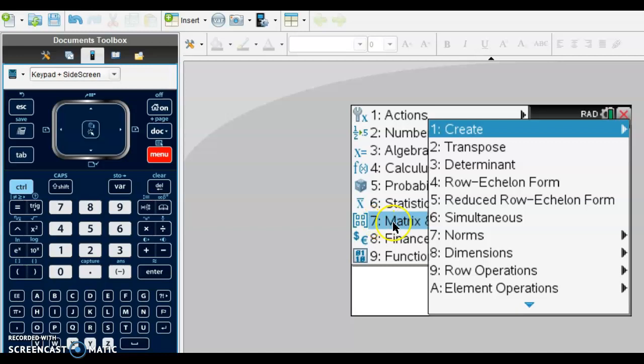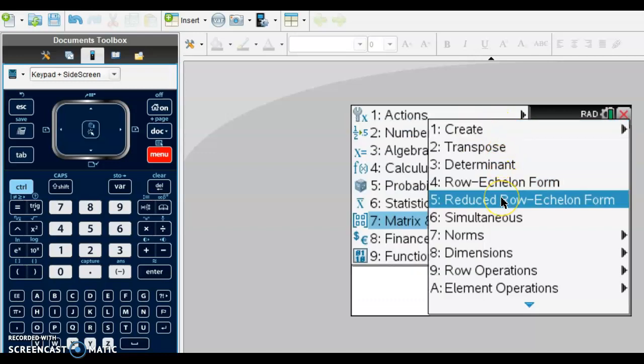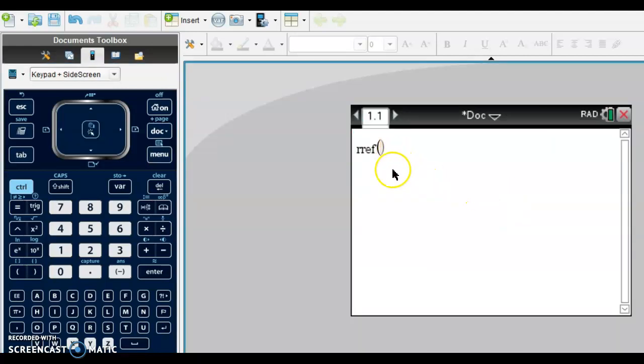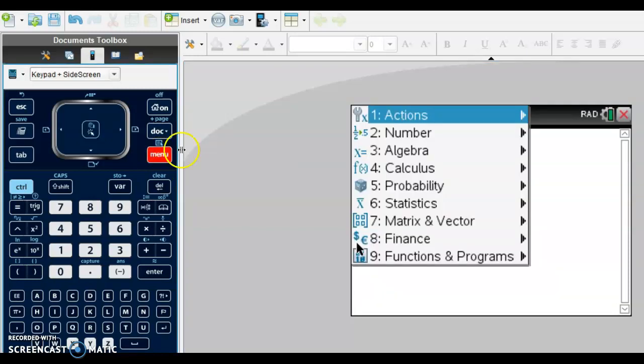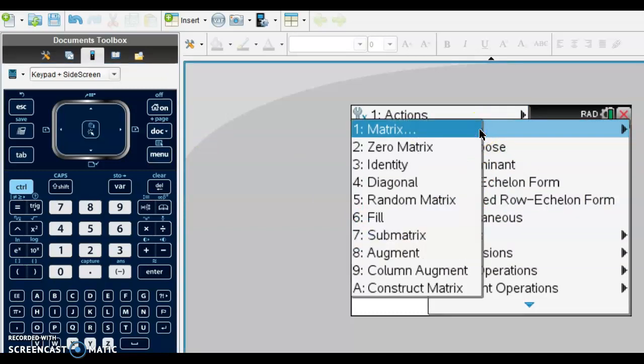You're going to click on menu, then matrix, and then we're going to do reduced row echelon form. So we're going to go to menu, matrix, and then number 5, reduced row echelon form. We should see this rref with parentheses. The cursor needs to be inside the parentheses. Next we're going to set up our matrix, so go back into menu, matrix, and then create, and we're going to create a matrix, number 1.